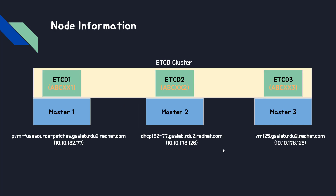Note information: there are three ETCD members on each master node, and they are in one cluster. Each ETCD has its own ID. Simply, I call them ABC-XX1, ABC-XX2, and ABC-XX3.